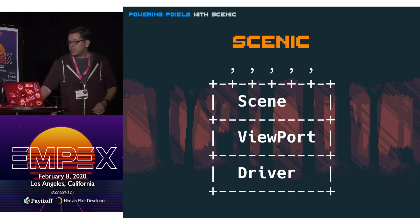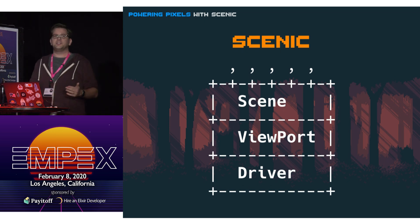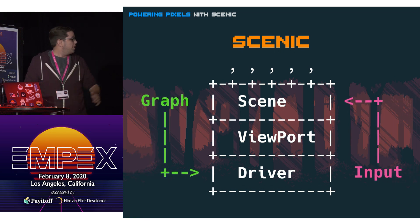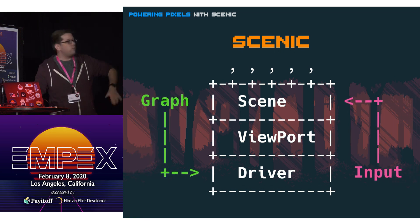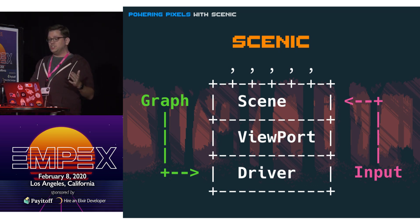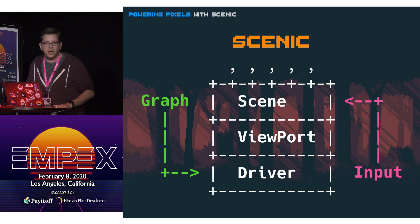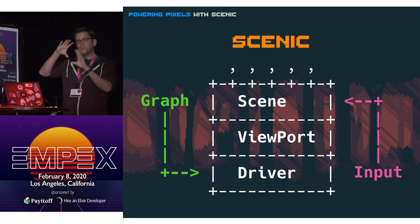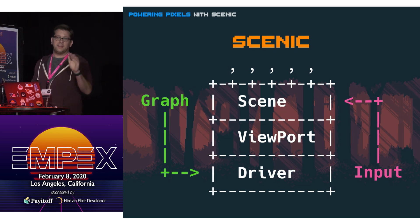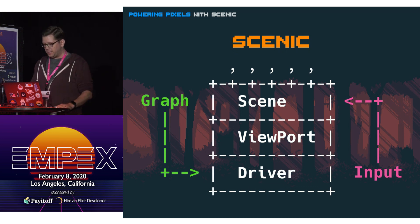The reverse action happens when you have events. If someone hits a keyboard or moves the mouse, that input gets sent back up from the driver through the viewport to the scene, and they translate back and forth that way. So the scene has no idea what hardware it's on — it doesn't care. It just says, hey, I want a box here, a circle there, this text — viewport, send it down to the driver, and it figures out how to actually display that.